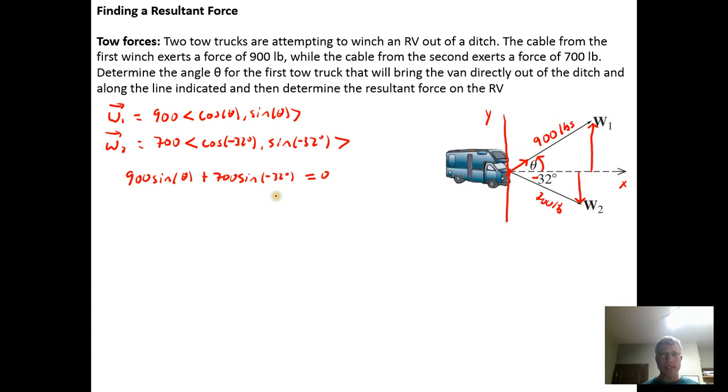So doing a little bit of algebra, that means that the sine of theta is going to need to equal, we'll subtract this from both sides and divide both sides by the 900 on the sine of theta. So we divide both sides by that 900. And this would reduce down to negative 7 ninths times the sine of negative 32 degrees. And then we would take the sine inverse of both sides. And the sine inverse will be great because the sine inverse gives us an angle between negative 90 degrees and 90 degrees. And clearly the angle theta we're after is in the range of the sine inverse function. So we take the sine inverse of negative 7 ninths times the sine of negative 32 degrees. And there's the exact angle that we need.